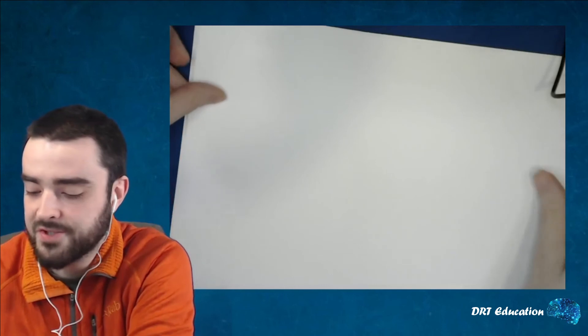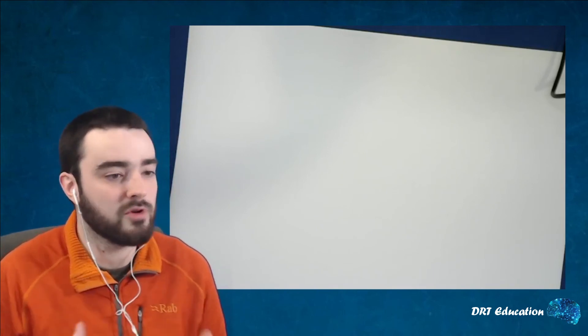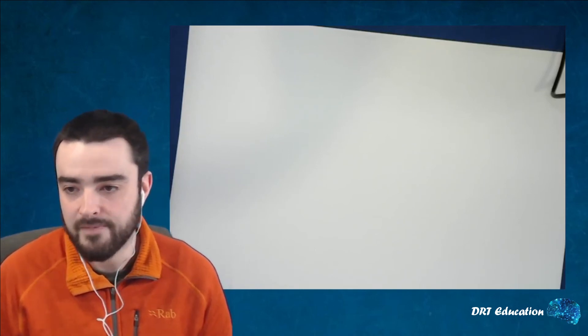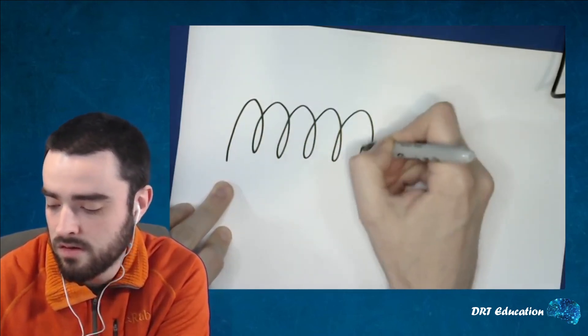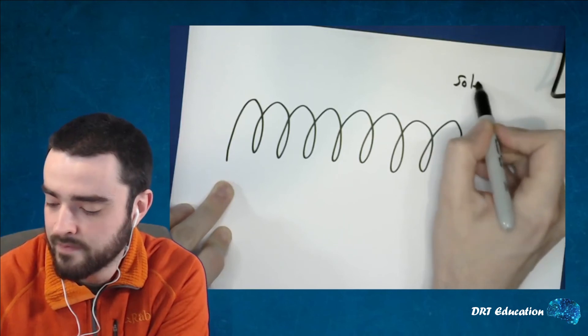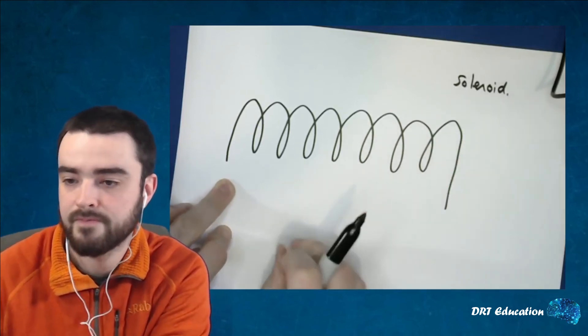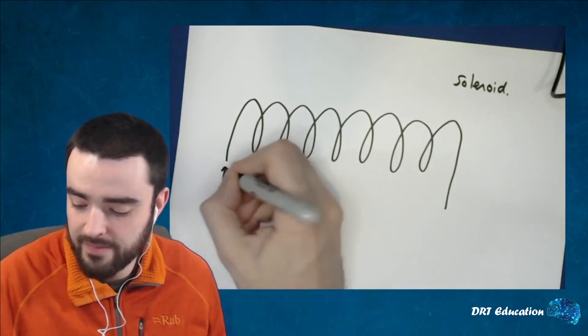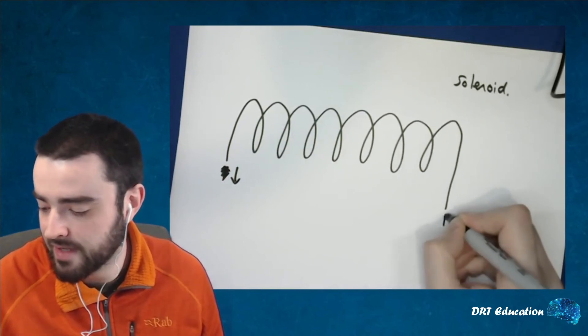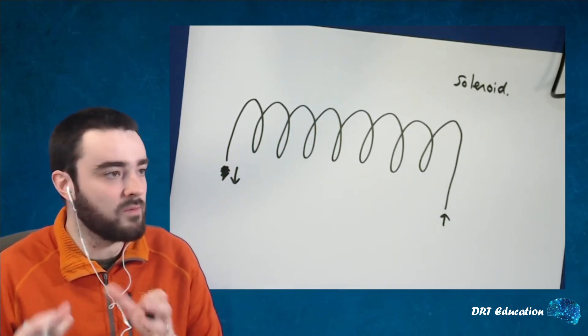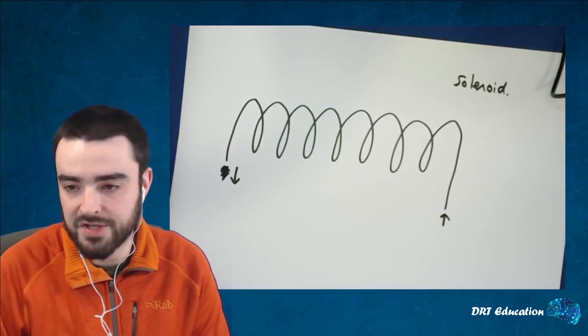Now, how can you make this stronger? Well, what you could do is you could loop that wire around, you could coil it up. And this is effectively going to be superimposing those magnetic fields on each other. If we were to coil it up like this into a solenoid, we could think about what was happening. We could think about what was happening at each individual part. We could draw them all together and then work out what the superposition would look like.